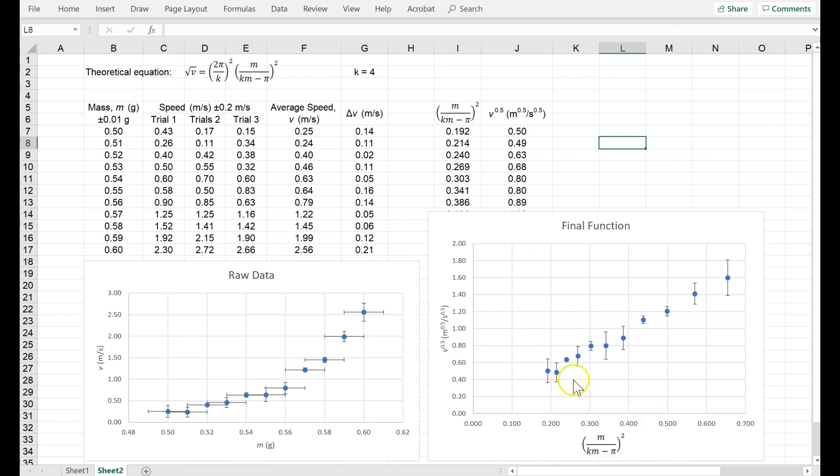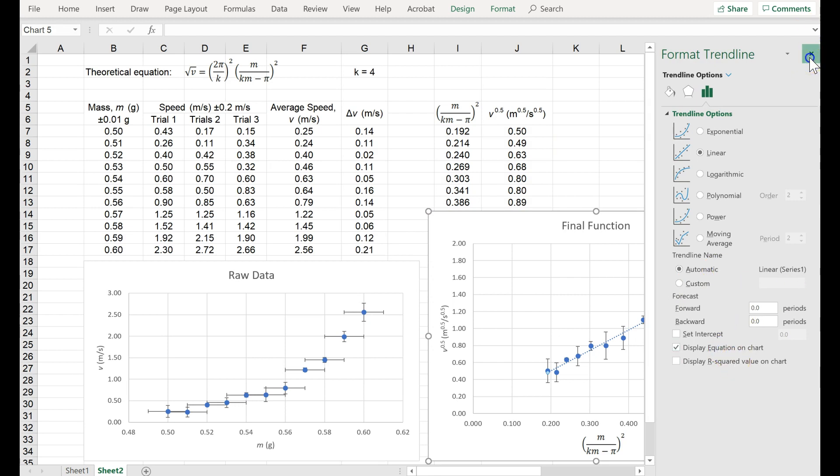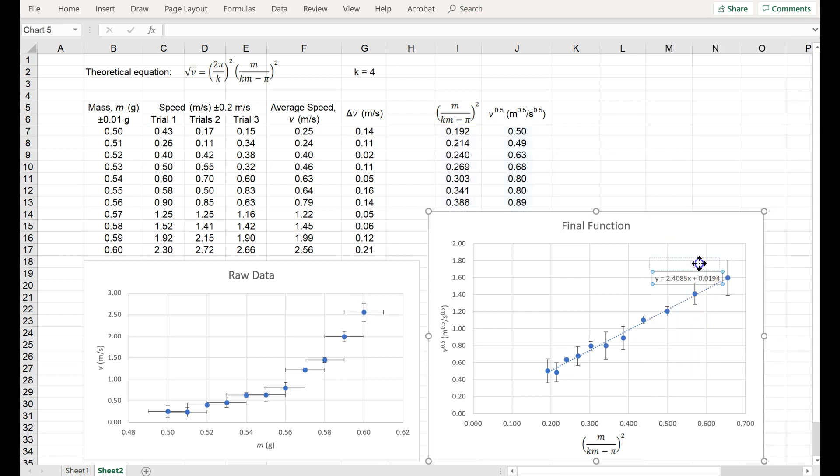But, for now, I'll just, whoops, I'll just copy it like that. Okay, so I'm going to need to add a trend line, and if I double click, display the equation. Alright, there it is.